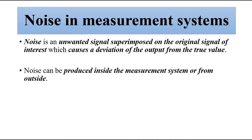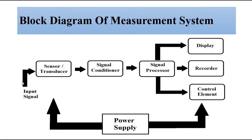Noise can be generated at the source side, external to the measurement system, or it can be produced in any of the subsystems — the measurement blocks that are involved. It can be produced within the sensor, signal conditioning circuitry, signal processor circuitry, power supply, or any of the subsystems involved in the measurement system.